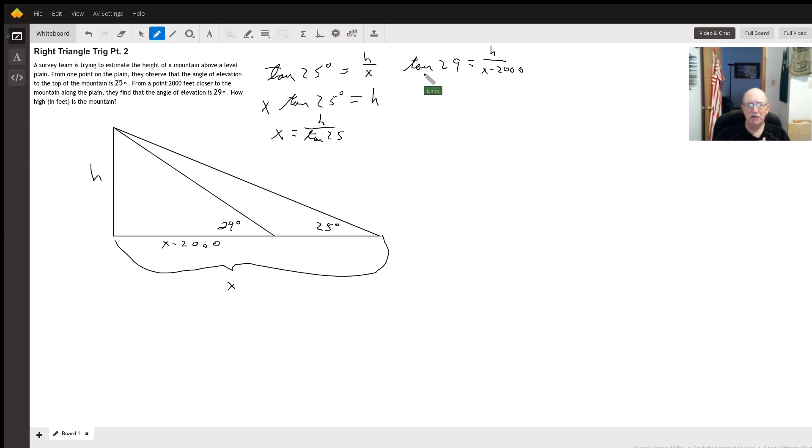For the other one, I'm going to multiply both sides by x minus 2,000 and get x minus 2,000 times tangent of 29 equals h. Then I'm going to divide both sides by tangent of 29. I get x minus 2,000 equals h divided by the tangent of 29. Then I'm going to add 2,000 to get x by itself. Now, since x has to equal itself, we can set these two equations equal to each other.